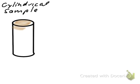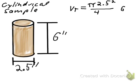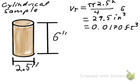Now let's consider this cylindrical sample — the undisturbed sample that was taken out of the ground. It has a cylindrical shape, an inside diameter of 2.5 inches and is 6 inches tall. With this information, we can easily determine the total volume of the sample. It's simply the diameter squared times pi divided by 4, times the height of 6 inches. The volume of the sample is 29.5 cubic inches, or 0.017 cubic feet.